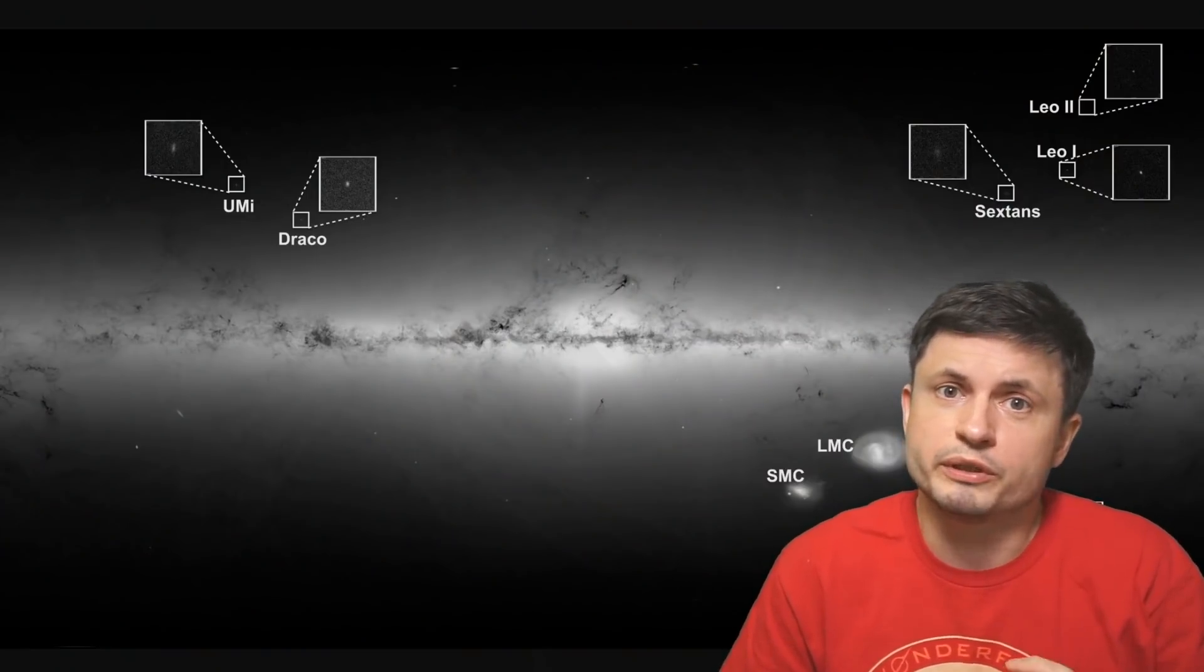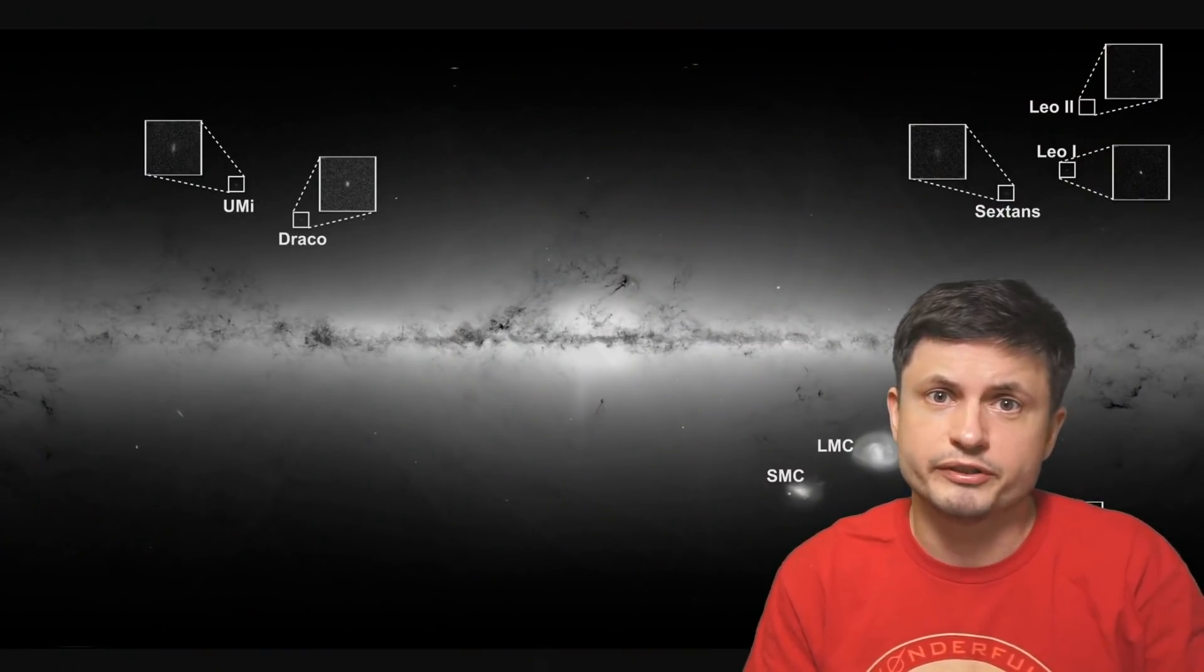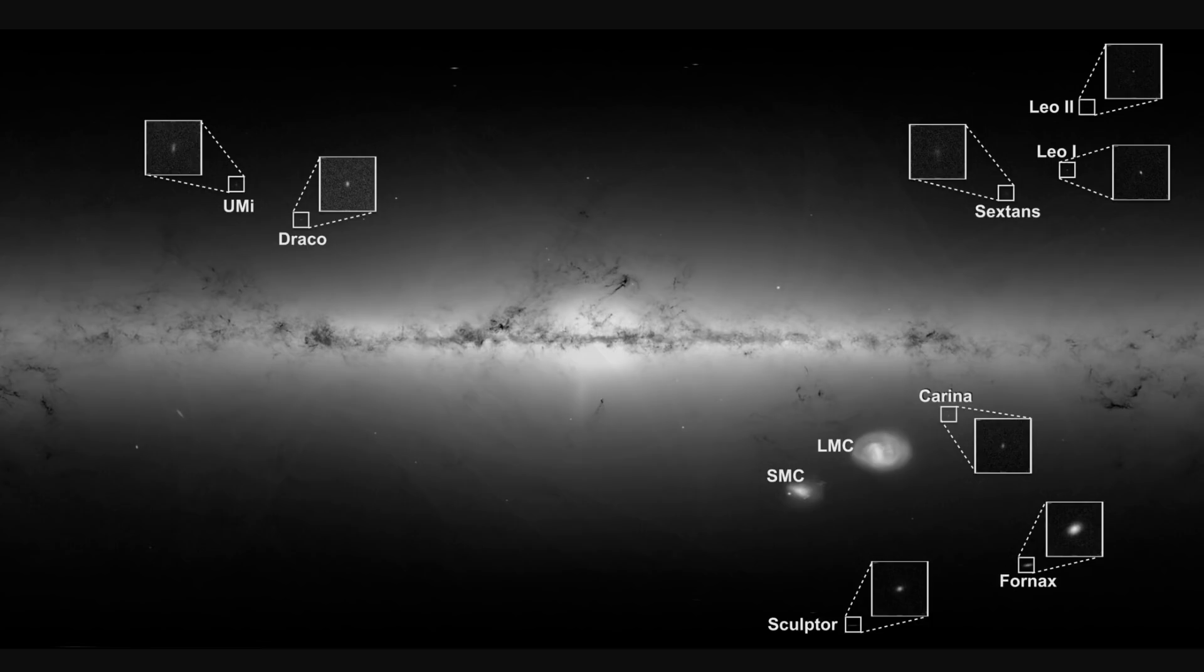But first of all, let's start with the map and the idea of what we're talking about. Let's start with this image provided by the press release you can find in the description. This shows us the night skies with some of the well-known dwarf galaxies that have been discovered in the last few decades.